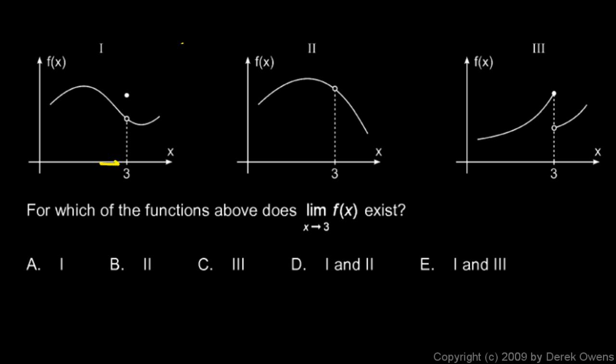Well, as we get really close to 3, we're getting really close to a particular y value, so the limit exists there. The y value is different from the value of the function there, but that's okay. The function is not continuous at 3, but it does have a limit.